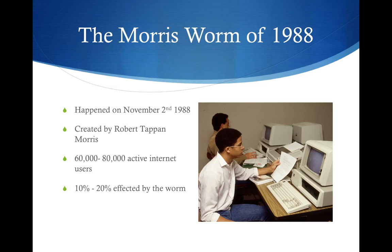To understand the impact of the Morris Worm, we have to go back into the 1980s. The internet was not like it is today. It was not available to the mass public, and was mostly used by hobbyists at the time. There was only about 60,000 to 80,000 users on the internet in 1988. Most of them were researchers and some big businesses.